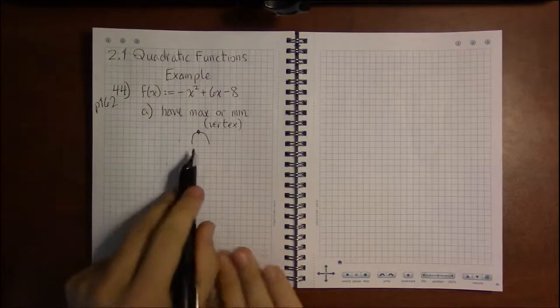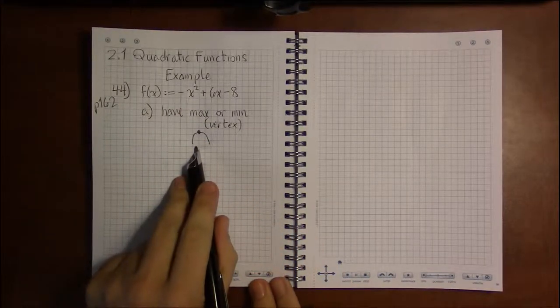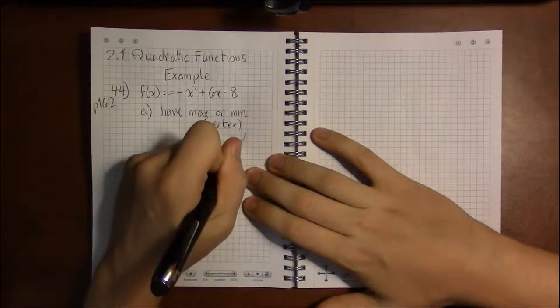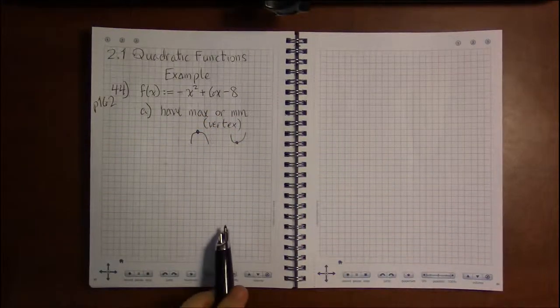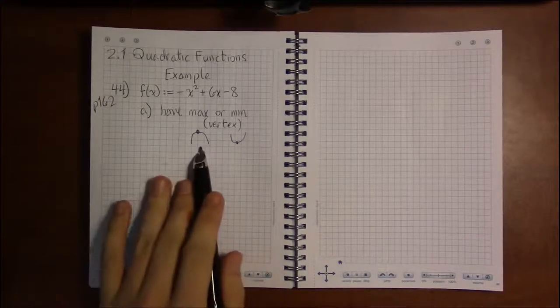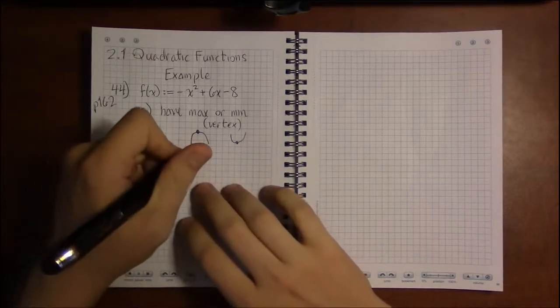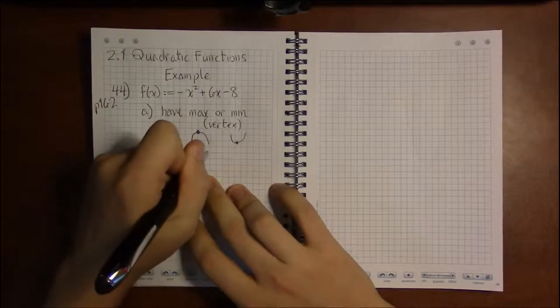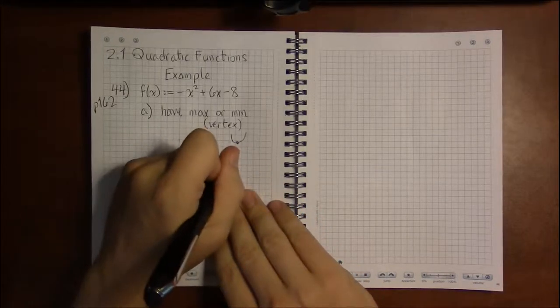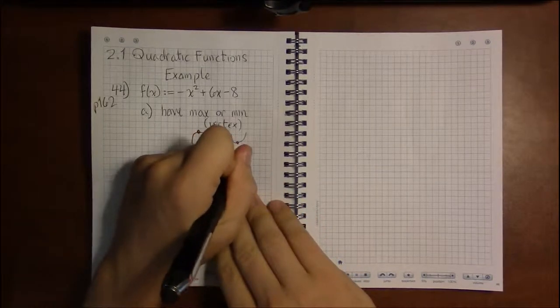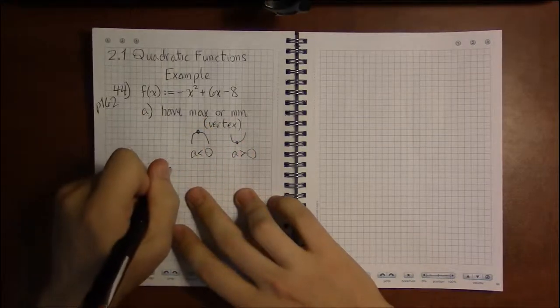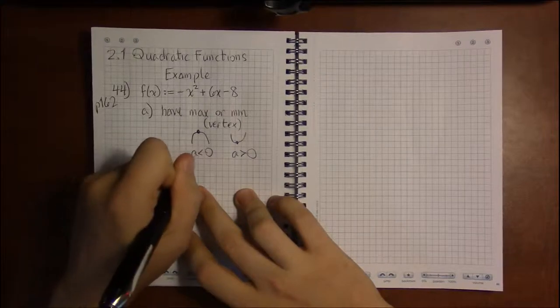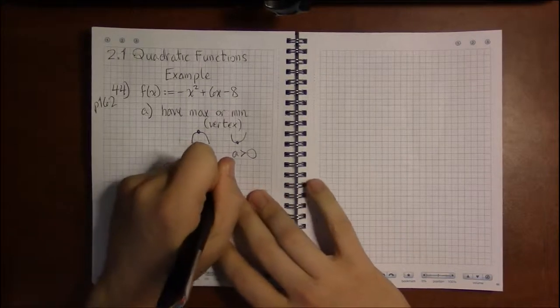To have a min, the vertex has to be at the bottom. We just got through with examples talking about how if the graph opens down, a is negative, and if the graph opens up, a is positive. The a in both standard and vertex form, here is the standard form.